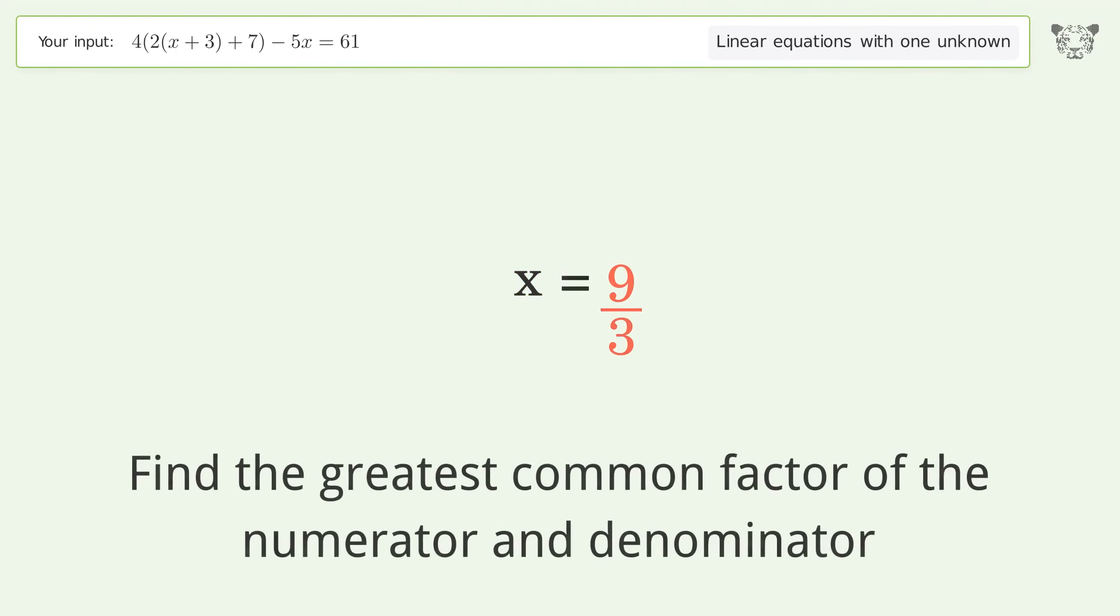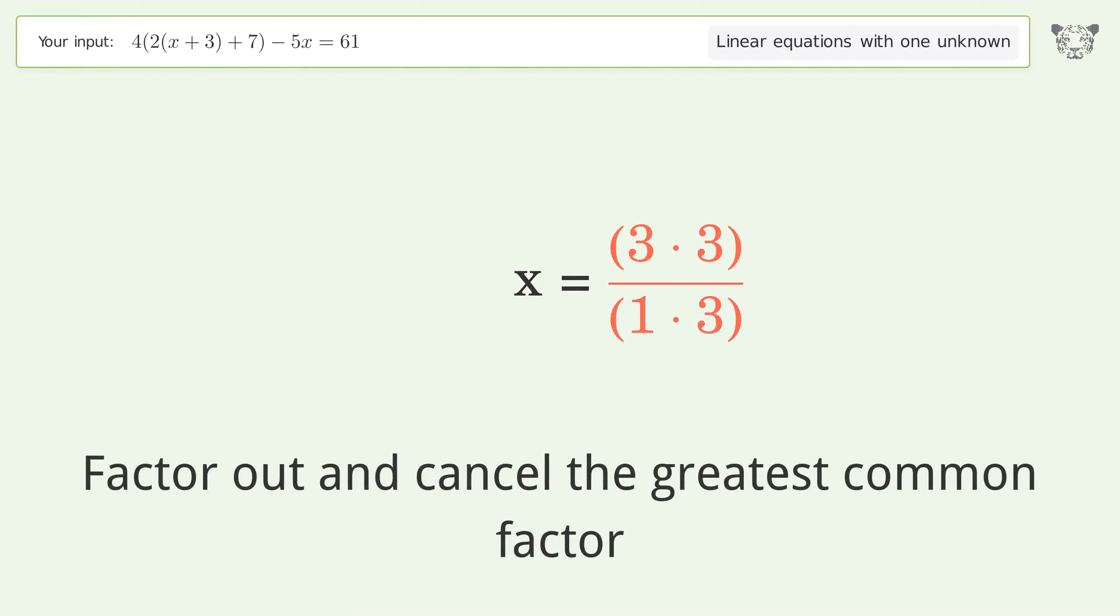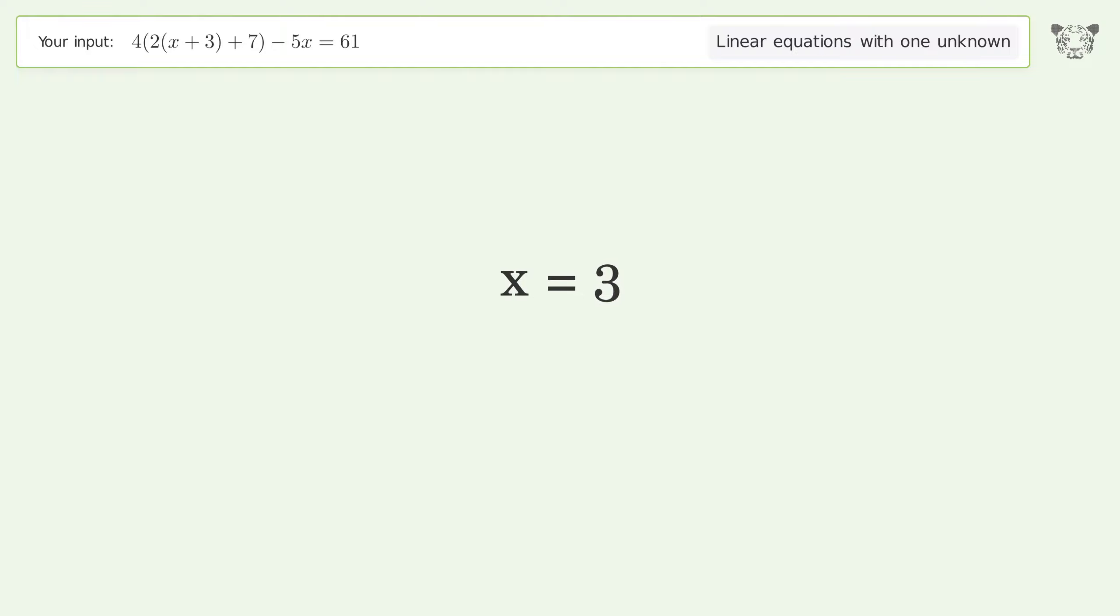Find the greatest common factor of the numerator and denominator. Factor out and cancel the greatest common factor. And so the final result is x equals 3.